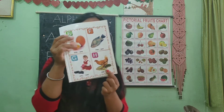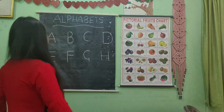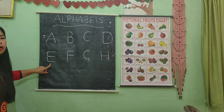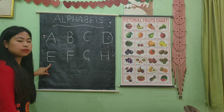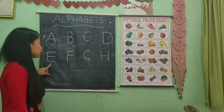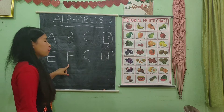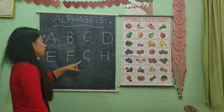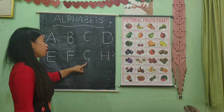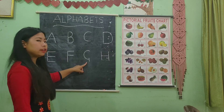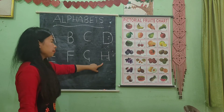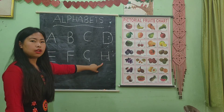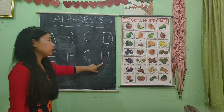Now, look at the board, children. Say with me. E for elephant. F for fish. G for grapes. H for hen. Very good.